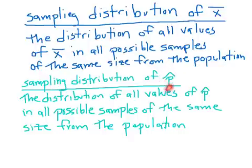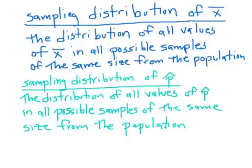We can do a similar thing for proportions. The sampling distribution of the sample proportion p-hat — for example, if your population is all high school students in the Bay Area, and you want to know what percent own an iPhone. Take every possible sample of 25 Bay Area high school students, figure out what proportion have an iPhone — in some samples it might be 18 out of 25, some 12 out of 25, some 25 out of 25. The sampling distribution of p-hat is the distribution of all values of p-hat in all possible samples of the same size from the population. Throughout chapter 9 we'll look at what we know about sampling distributions.